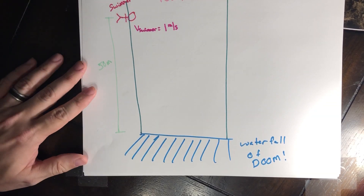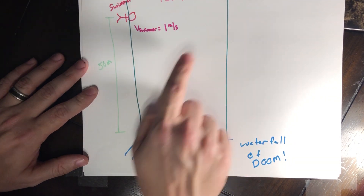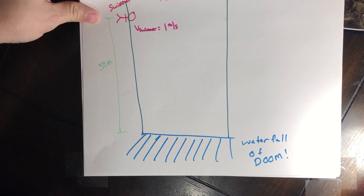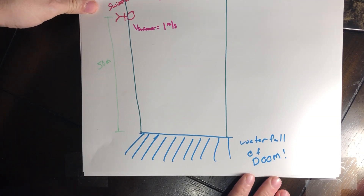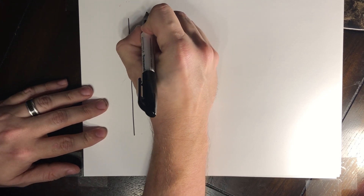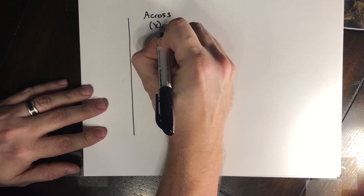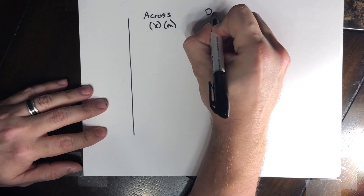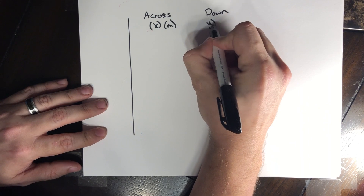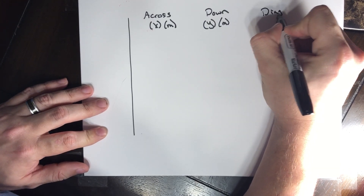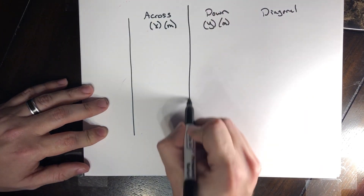We have two directions of motion: the X direction going straight across, and the Y direction going down towards the waterfall. Those directions don't really affect each other at all, other than the fact that the time we find for one might be useful in another. So we're going to start out with a chart — the cross direction (X, in meters), the down direction towards the waterfall (Y, also in meters), and we may also need a diagonal direction which is a combination of the two.